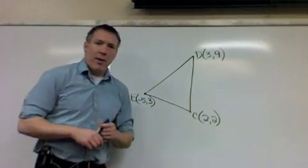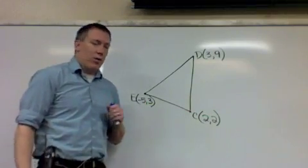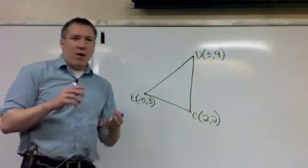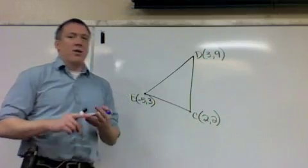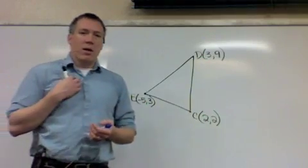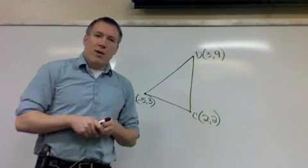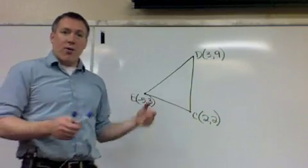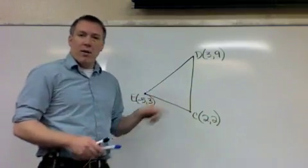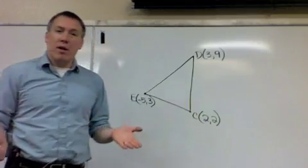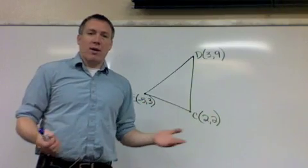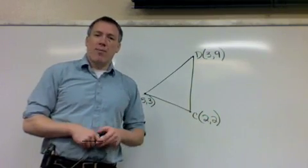The last kind of problem they may give you is to give you a triangle based on three coordinate points. And then ask you whether that triangle is scalene, isosceles, or a right triangle. All they're really asking you to do is find the distance between every set of points. Therefore, finding the length of each side. And then if two of them are the same, it's isosceles. If three of them are the same, then it's equilateral. And if none of them are the same, it's scalene.